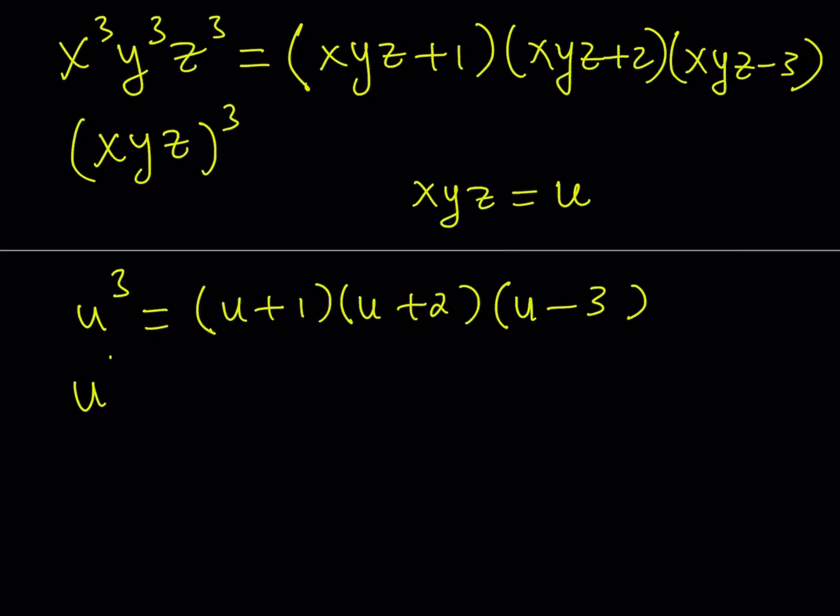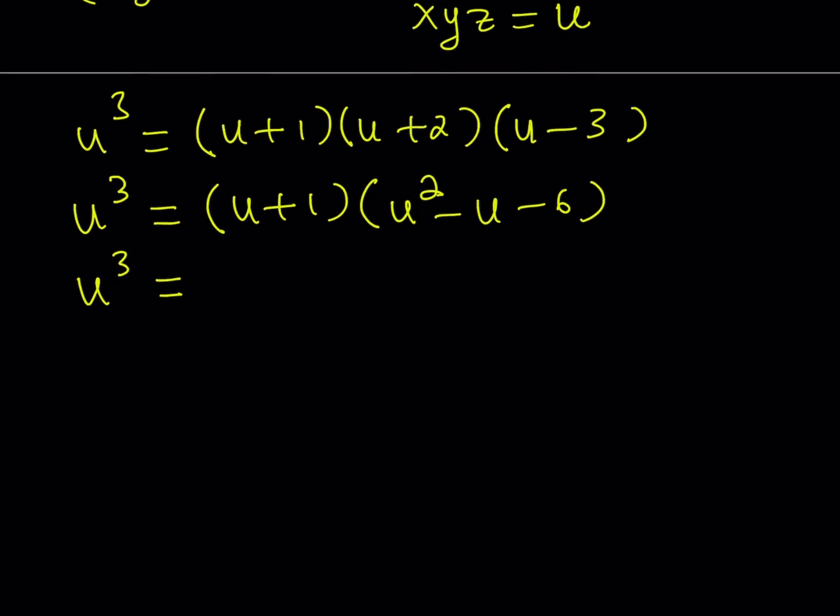We get u cubed equals u plus 1 times u plus 2 times u minus 3. If you distribute this, multiplying u plus 2 and u minus 3 gives u squared minus u minus 6. Distributing again, u cubed minus u squared minus 6u plus u squared minus u minus 6. The u squared and u cubed terms cancel out, leaving 7u equals negative 6, which implies u equals negative 6 over 7.